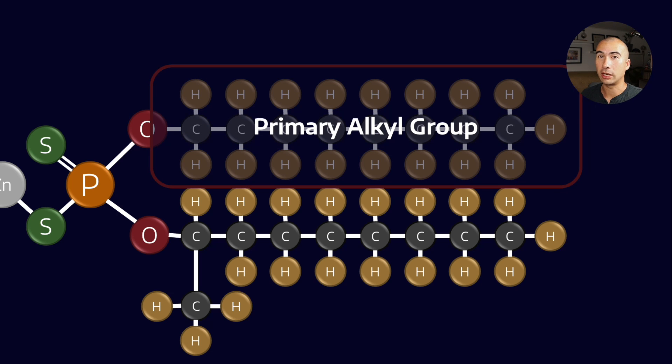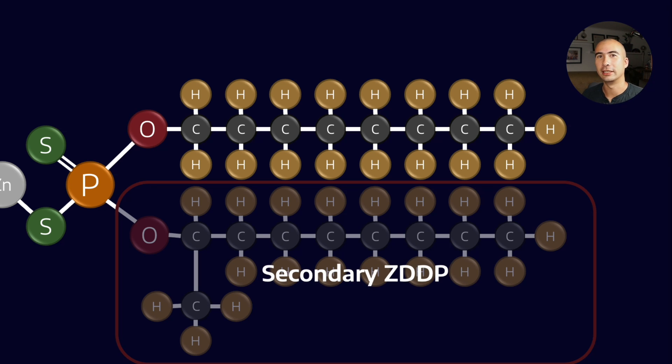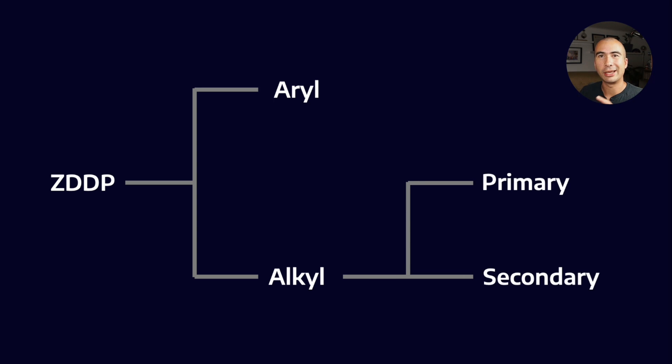So this top one here would represent a primary alkyl group which would give us a primary ZDDP. The second alkyl group is called a secondary alkyl group which would give us a secondary ZDDP. Now these are not the only flavors of ZDDP. If we were to substitute an aromatic ring, for example, this would give us an aryl ZDDP. So if we were to break up the family tree of ZDDPs, firstly we would define them by whether they are aryl or alkyl, and then among the alkyls we divide them into primary and secondary ZDDPs.